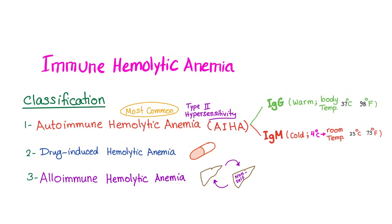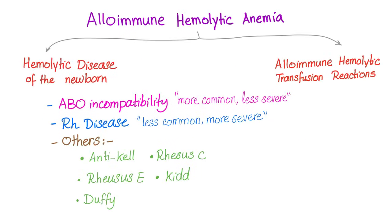Normocytic anemia has many mechanisms including immune hemolytic anemia, further subdivided into alloimmune hemolytic anemia. We are talking about alloimmune hemolytic anemia — hemolytic disease of the newborn — which is subdivided into ABO incompatibility and RH incompatibility.